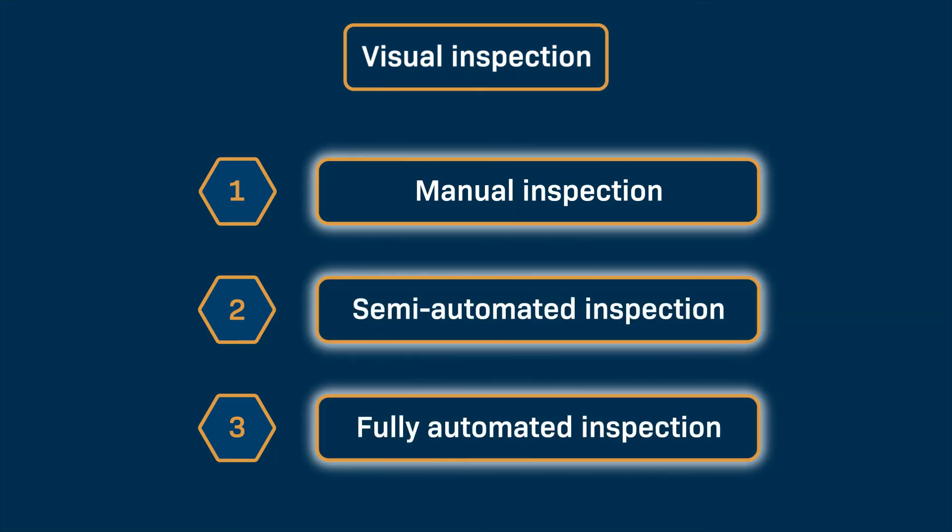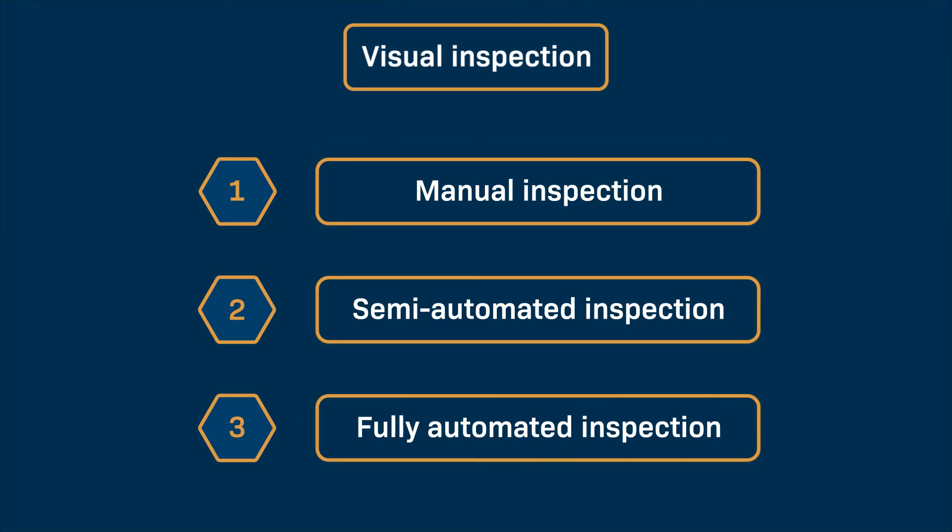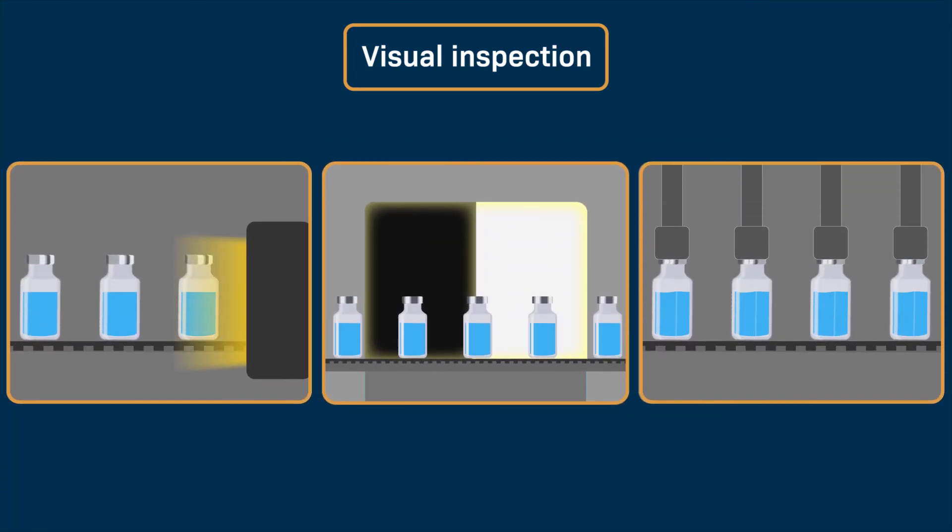Each of these methods makes use of the three essential elements of visual inspection that help to detect defects: light, contrast, and rotation.